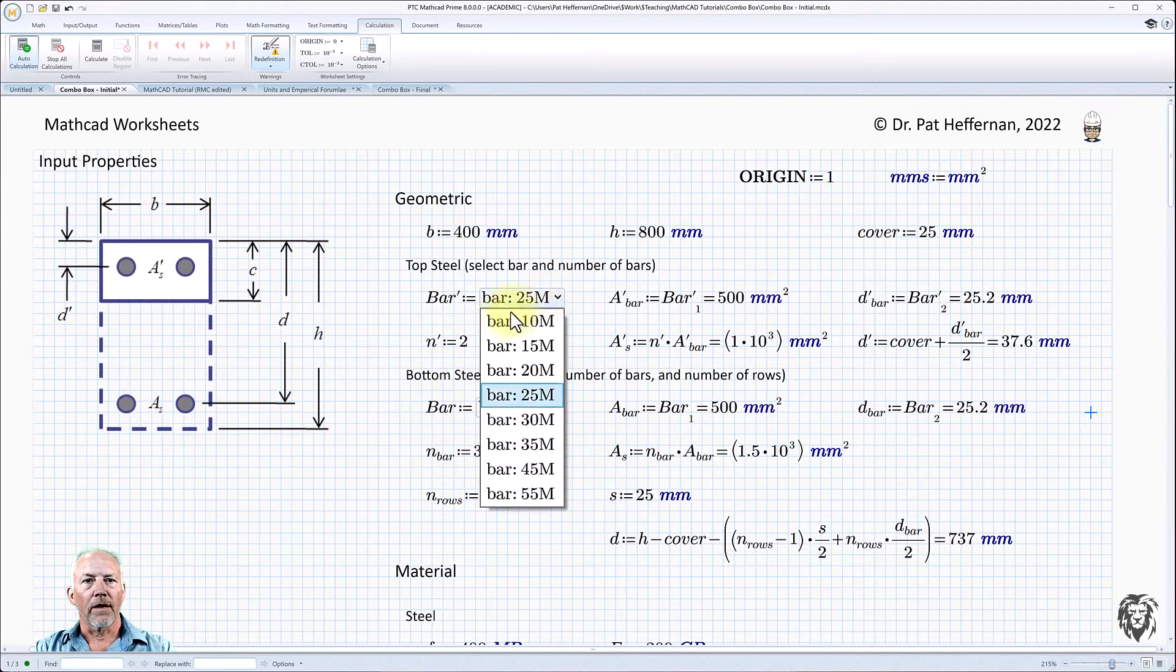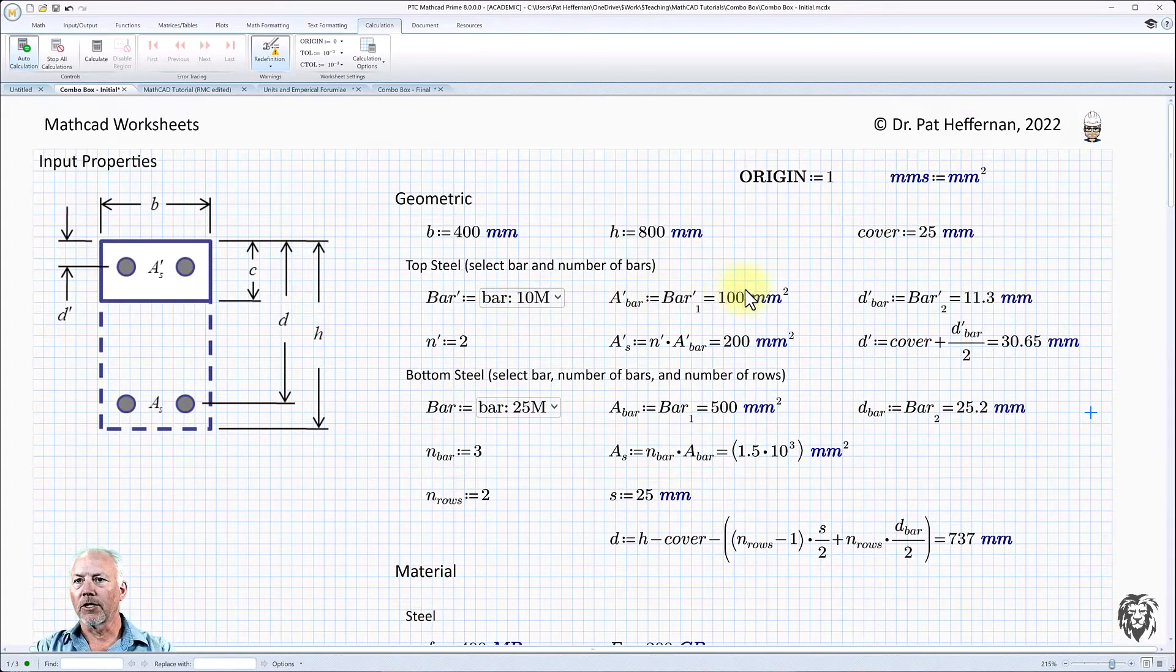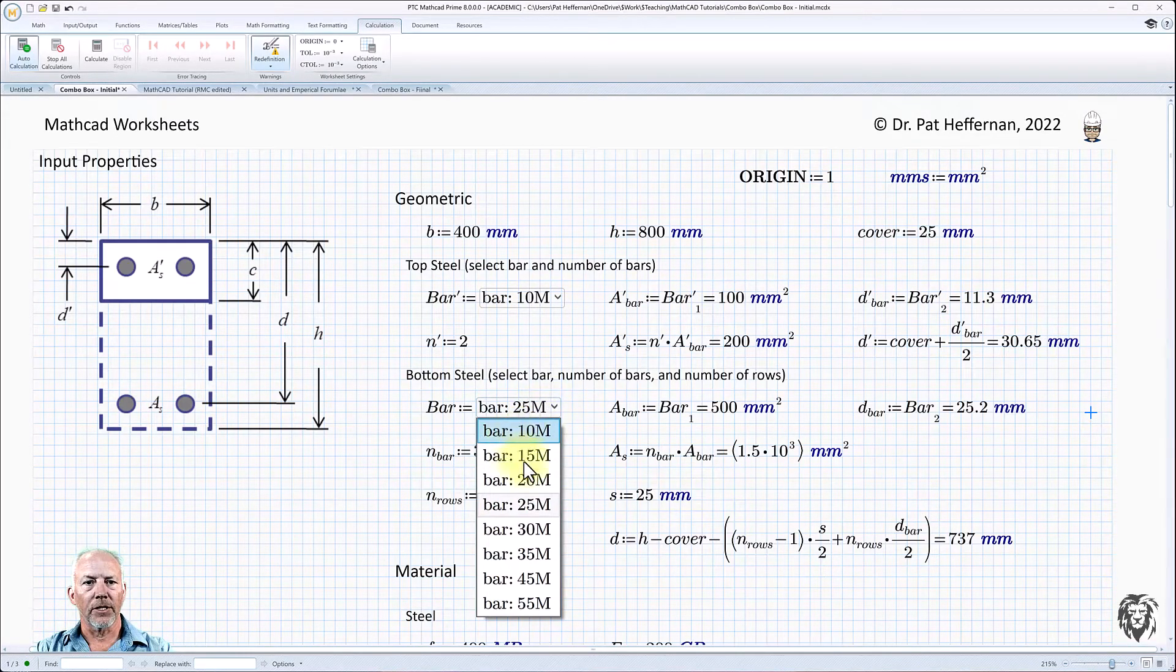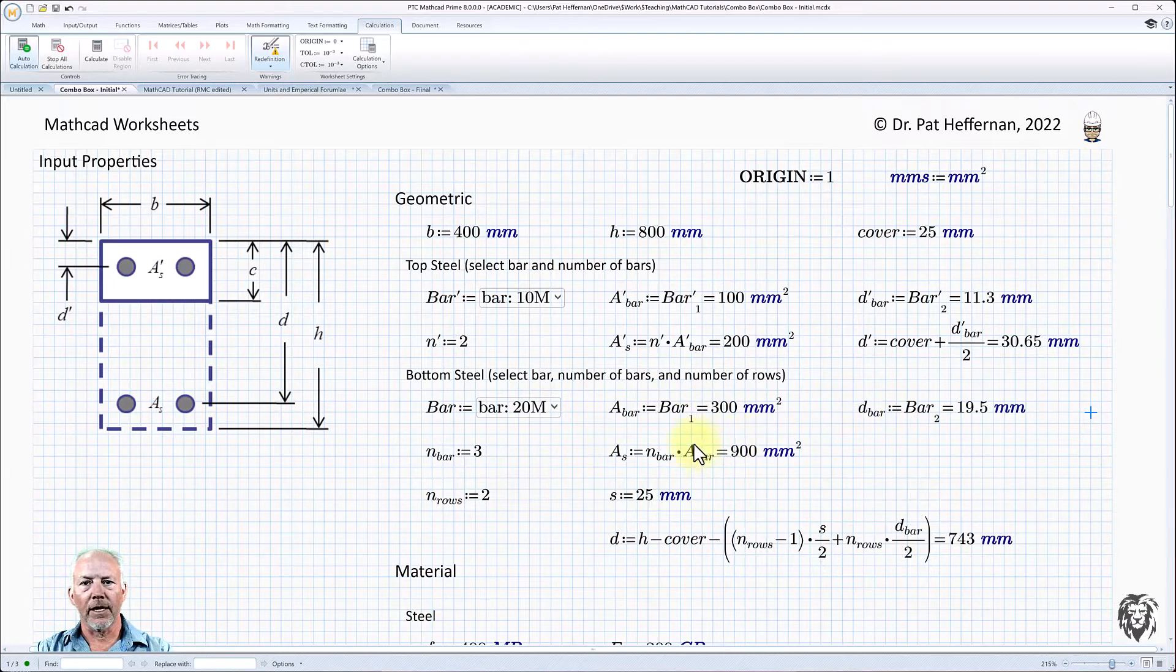And now, so if we choose 10M, which was the original choice up here, and we choose 20M down here, everything updates. And so we can copy and paste this, we can put it into a whole bunch of different, whenever we have a concrete cross section, we can choose copy and paste our combo box into those worksheets and take advantage of the fact now that we have this table built in.